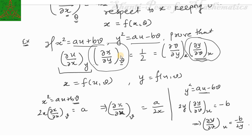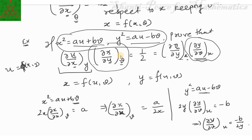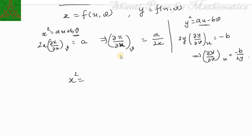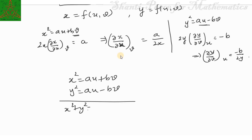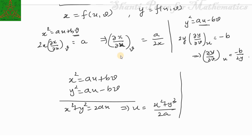To compute the remaining quantities, we need u and v as functions of x and y. To get these relations, we add and subtract the two equations. Adding x² = au + bv and y² = au − bv gives x² + y² = 2au, so u = (x² + y²)/(2a). Subtracting gives x² − y² = 2bv, so v = (x² − y²)/(2b).